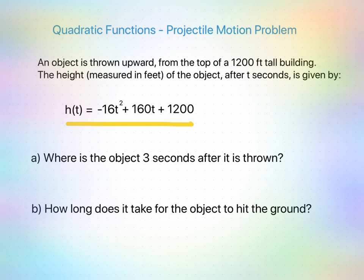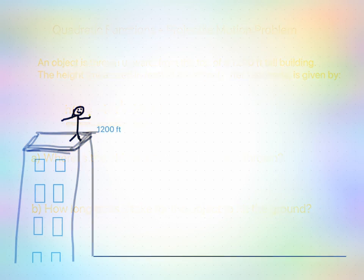H of t is equal to negative 16t squared plus 160t plus 1,200, ergo our 1,200 feet tall building. So once again, we're throwing an object from 1,200 feet tall building upwards, and eventually it will hit the ground.